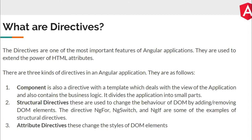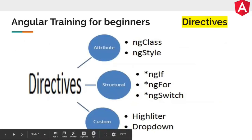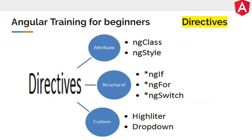Attribute directives change the style of DOM elements. Attribute directives have two types: ngClass and ngStyle. These help you add classes and styles to any HTML element respectively.